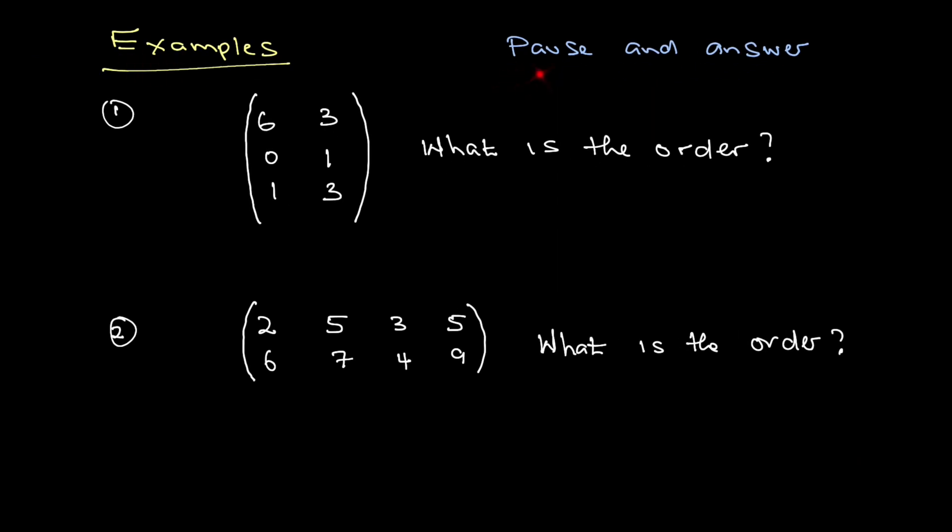Here's an example. Pause and answer the question. What is the order of this matrix? The order is three by two - three rows, two columns.